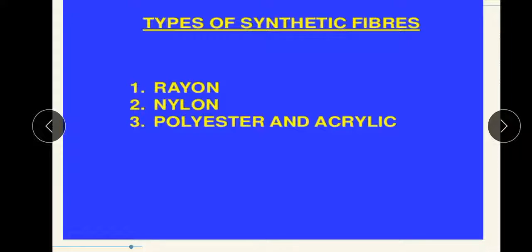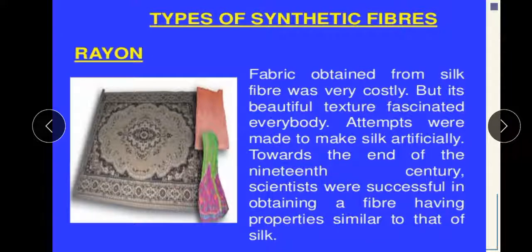There are three types of synthetic fiber: rayon, nylon, polyester and acrylic. Starting with the first — rayon. What was the need of such a synthetic fiber? The answer is: fabric obtained from silk fiber was very costly and beautiful.